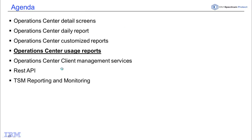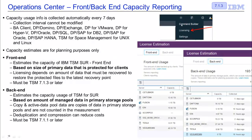We also have usage reports, which are underneath the Settings tab when you go into licensing. This shows a capacity estimate that you can use for planning purposes only, for either front-end usage or back-end usage. The front-end estimates capacity based on the size of the primary data that's protected for clients, versus the back-end, which is based on the amount of managed data in a primary storage pool.